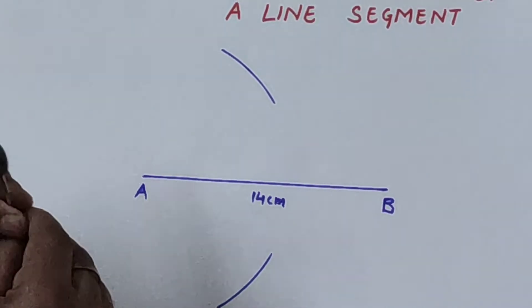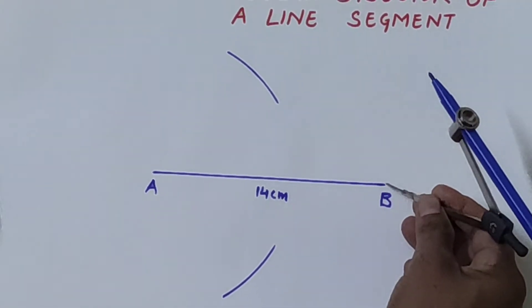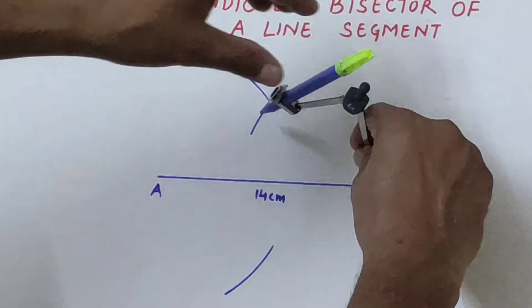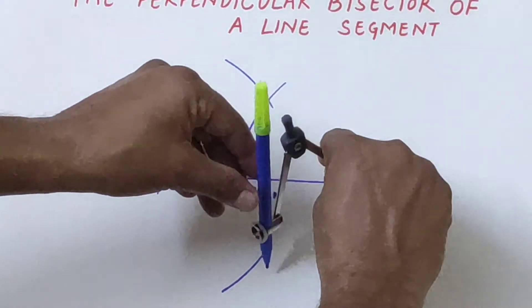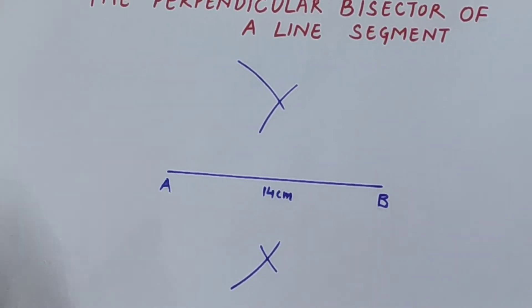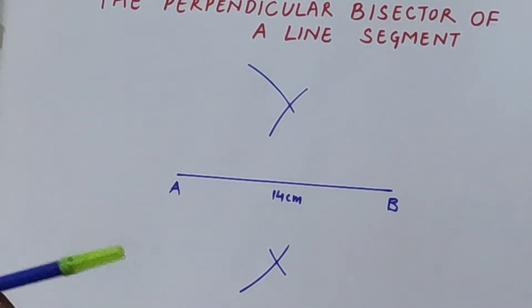Now keep the same length, don't make any change. Now place it at point B and here also you are going to make an arc up and down from B, such that the arcs should intersect each other.